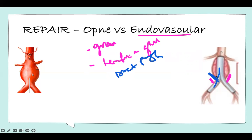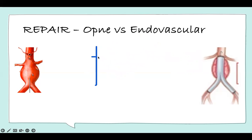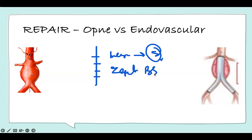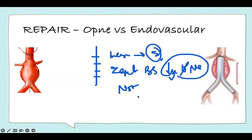Both repair types can have Cullen's sign, Grey-Turner sign, and ecchymosis. Always check pulses, urine output, and everything. For open repair specifically — since there's an abdominal incision — check the incision for infection and sepsis. Also expect bowel sounds to be decreased or absent one to two days after surgery — don't worry about that, it's expected.